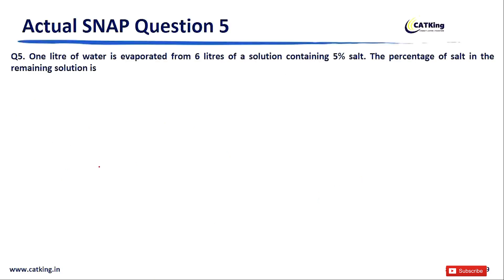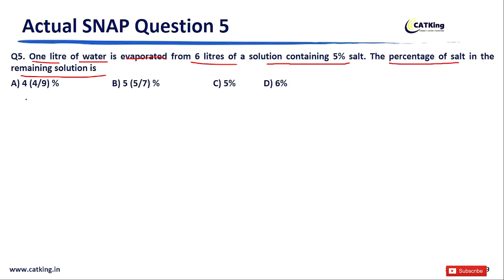Question number 5: 1 liter of water is evaporated from 6 liters of a solution containing 5% salt. The percentage of salt in the remaining solution is — option A: 4 and 4/9 (mixed fraction), option B: 5 and 5/7 percent (mixed fraction), option C: 5 percent, and option D: 6 percent.